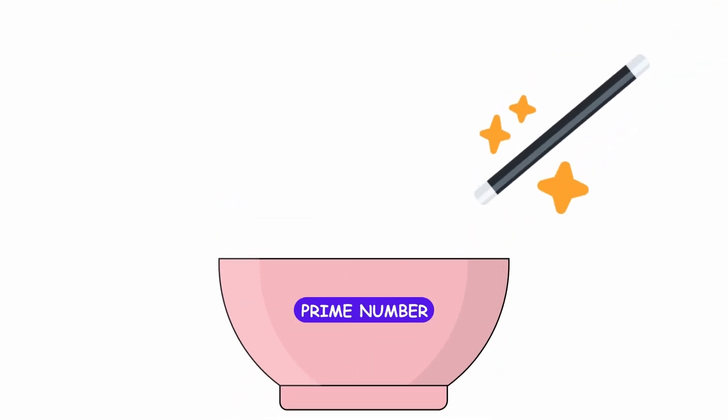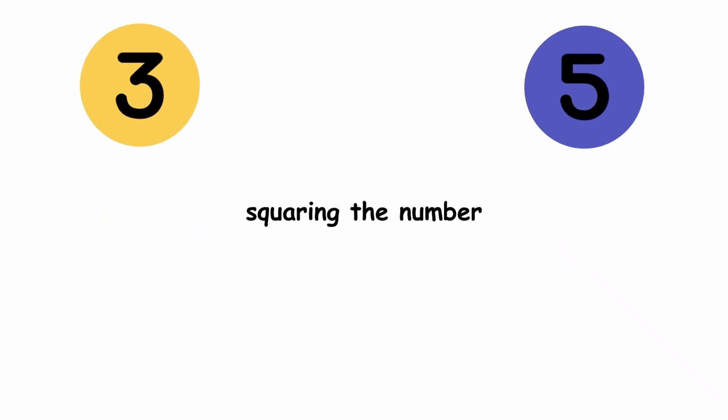Pick a prime number greater than 2, like 3. Then take the next prime number after that, in this case 5. Then take the square of each number. In our case 3 squared equals 9, and 5 squared equals 25.